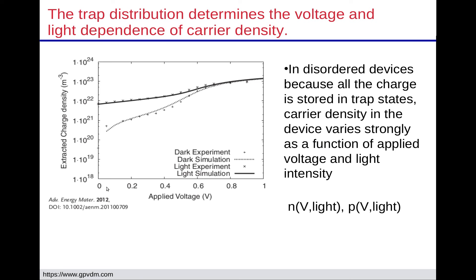Charge density in these devices, as measured by charge extraction, versus voltage — this is work I did with Chris Shuttle. As we increase the voltage from zero volts, you can see the charge density increases in the device by one to about three orders of magnitude; the same when you switch the light on. The electron density and hole density are very strong functions of voltage and light. As you apply voltage, the charge goes up a lot because you're filling the trap states in these disordered devices.